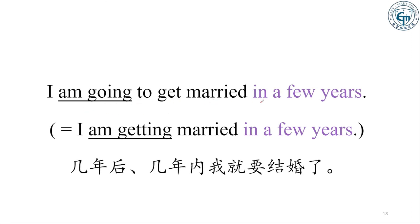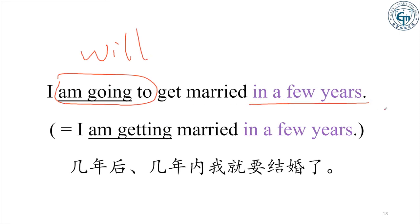"I am going to get married in a few years."(过几年/在最近几年内我要结婚了。) "be going to do something" 相当于 will。"I will get married in a few years" 也可以说成 "I am getting married in a few years"——因为句子里有将来时间 "in a few years",用进行时加将来时间就相当于将来时,一听就知道是将要结婚,而不是正在结婚。